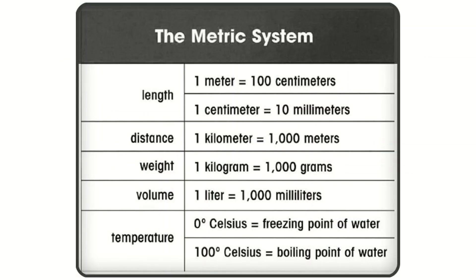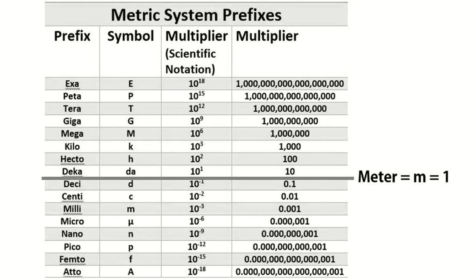These are common metric conversions you should be familiar with. For length, one meter is equivalent to 100 centimeters and one centimeter is equivalent to 10 millimeters. For distance, one kilometer equals 1,000 meters. For weight, one kilogram equals 1,000 grams. In the metric system we use prefixes to simplify the expression of units, such as hexa, peta, tera, giga, mega, kilo, and many more.